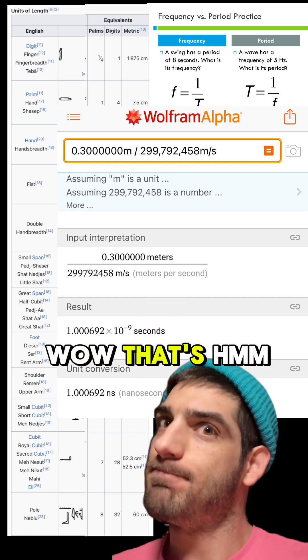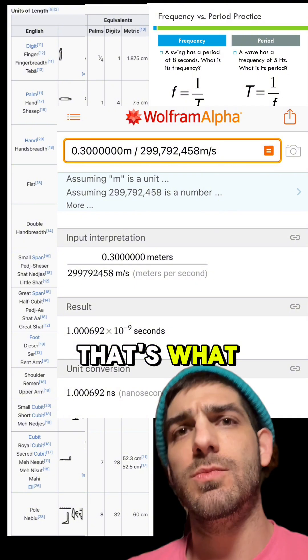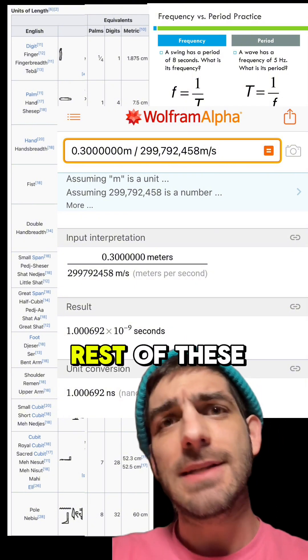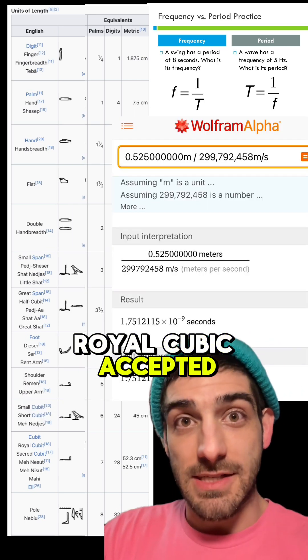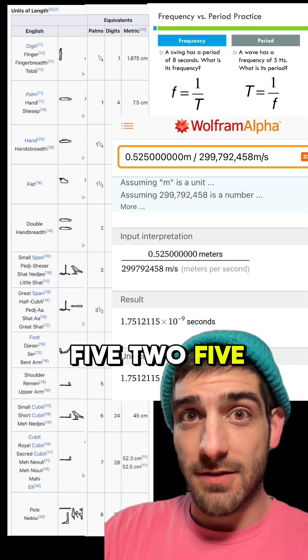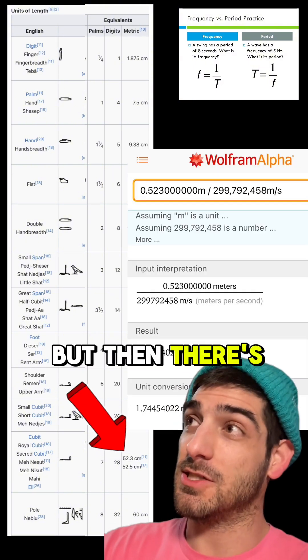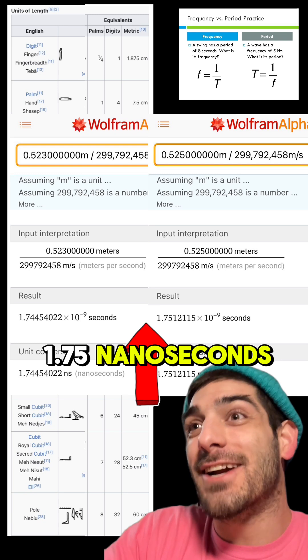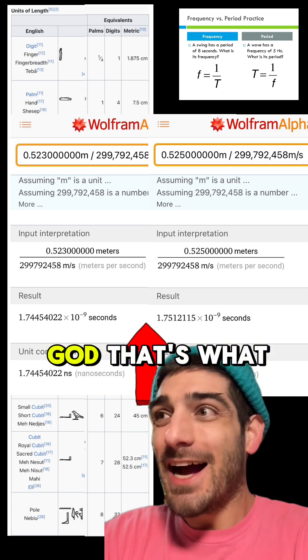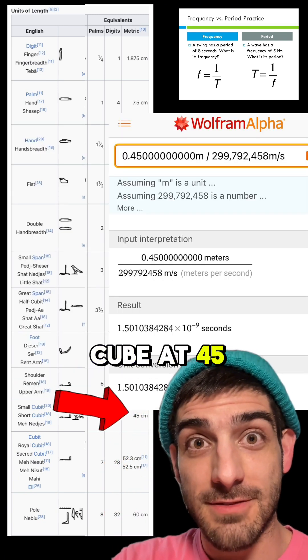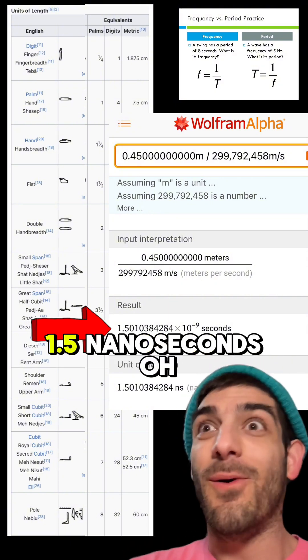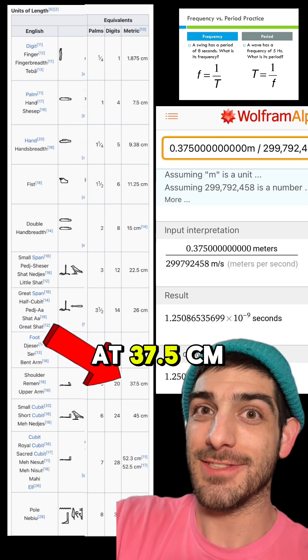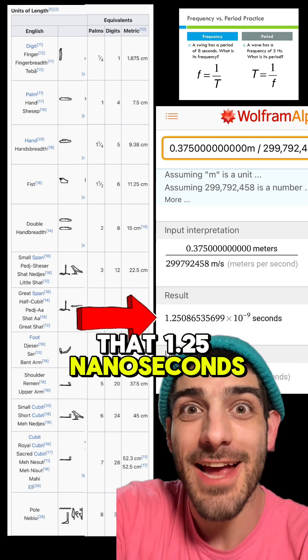Whoa. That's pretty odd. That's what a weird coincidence for that to be. Let's check one of these other ones. Royal cubit, accepted version is 0.525 meters. Oh, wow. Look at that. But then there's also the 0.523. They both straddle 1.75 nanoseconds. What do you know? Small cubit at 45 centimeters. Oh my God. 1.5 nanoseconds. The shoulder neck's at 37.5 centimeters. Whoa. Look at that. 1.25 nanoseconds.